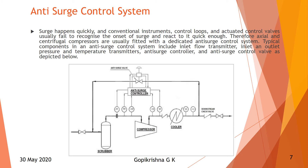The system layout includes a suction scrubber at the inlet, with flow meter, flow transmitter, temperature transmitter, and pressure transmitter at the suction of the compressor. All these control inputs are given to the controller, as well as discharge pressure and temperature. There is also a cooler after the discharge, with pressure and temperature transmitters. The discharge is connected through the anti-surge control valve back to the suction. Based on suction, discharge, pressure, and other conditions, the control valve will open and close to maintain the pressure balance.